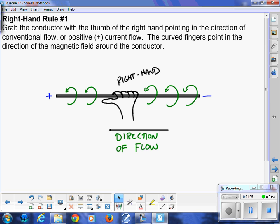Right-hand rule number one, and you can see my fantastic artistic rendition. Grab the conductor with the thumb and right hand pointing in the direction of conventional flow or positive current flow. I have swapped this up, you're going to have to edit your diagram a little bit. Let's cross out that positive negative sign.